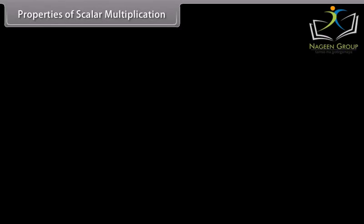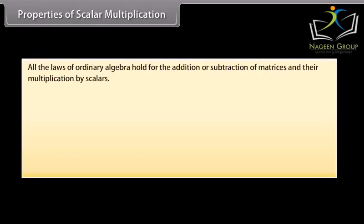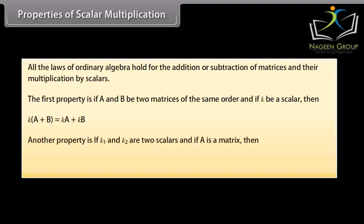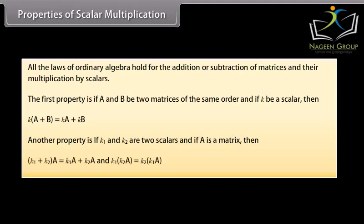Properties of scalar multiplication. All the laws of ordinary algebra hold for the addition and subtraction of matrices and their multiplication by scalars. If A and B are two matrices of the same order and K is a scalar, then K(A plus B) equals KA plus KB. Also, if K1 and K2 are two scalars and A is a matrix, then (K1 plus K2)A equals K1A plus K2A, and K1 into K2 into A equals K2 into K1 into A.